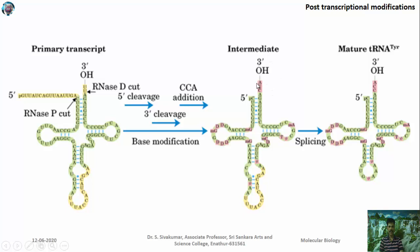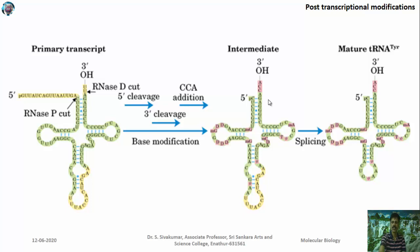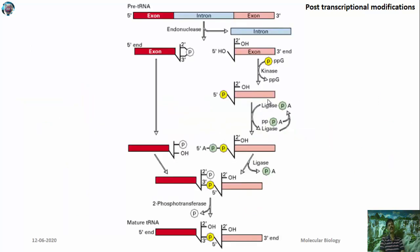All tRNA molecules share the same 3' terminal CCA sequence, which is essential for amino acid attachment during translation by aminoacyl-tRNA synthetase enzymes. The diagram shows how introns of tRNA are spliced.